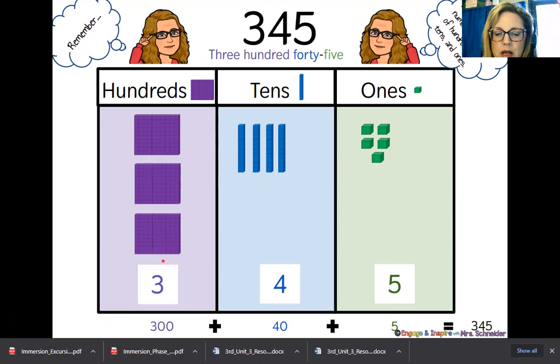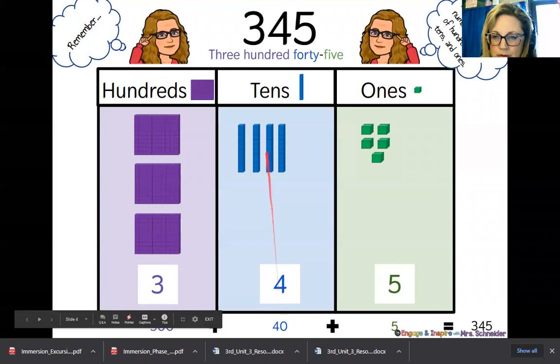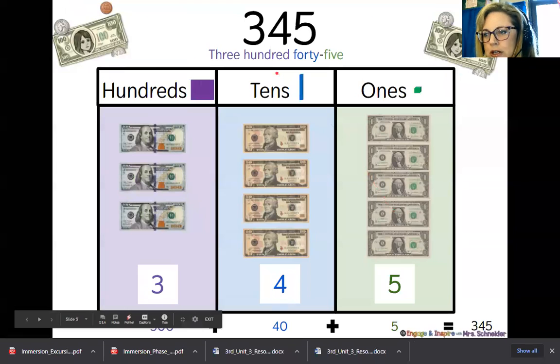If I point my arrow down there, it's three hundreds plus 40, that's four tens, plus five ones equals 345. That's called expanded form.